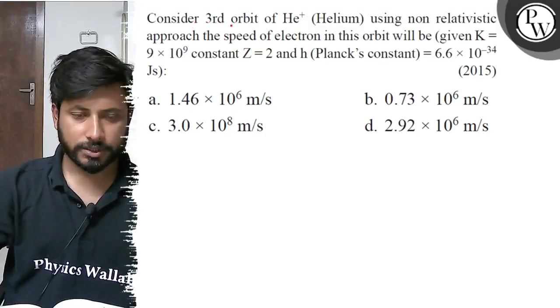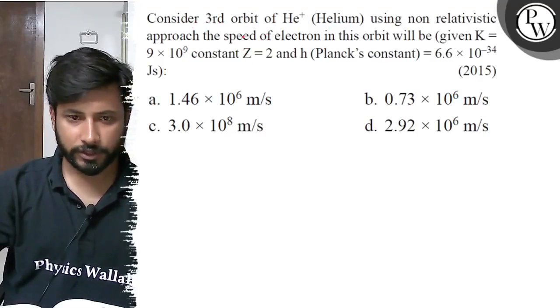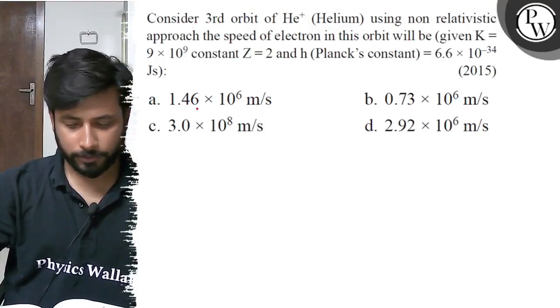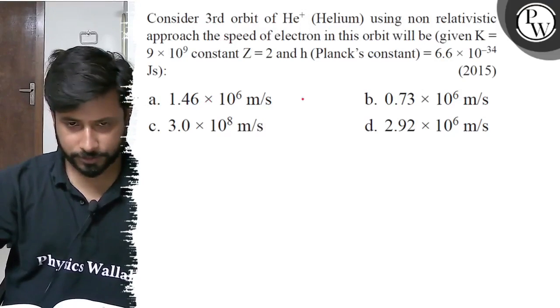Hello, let us see this question. Consider the third orbit of He+ (Helium) using non-relativistic approach. The speed of electron in this orbit will be: (a) 1.46 × 10^6 m/s,